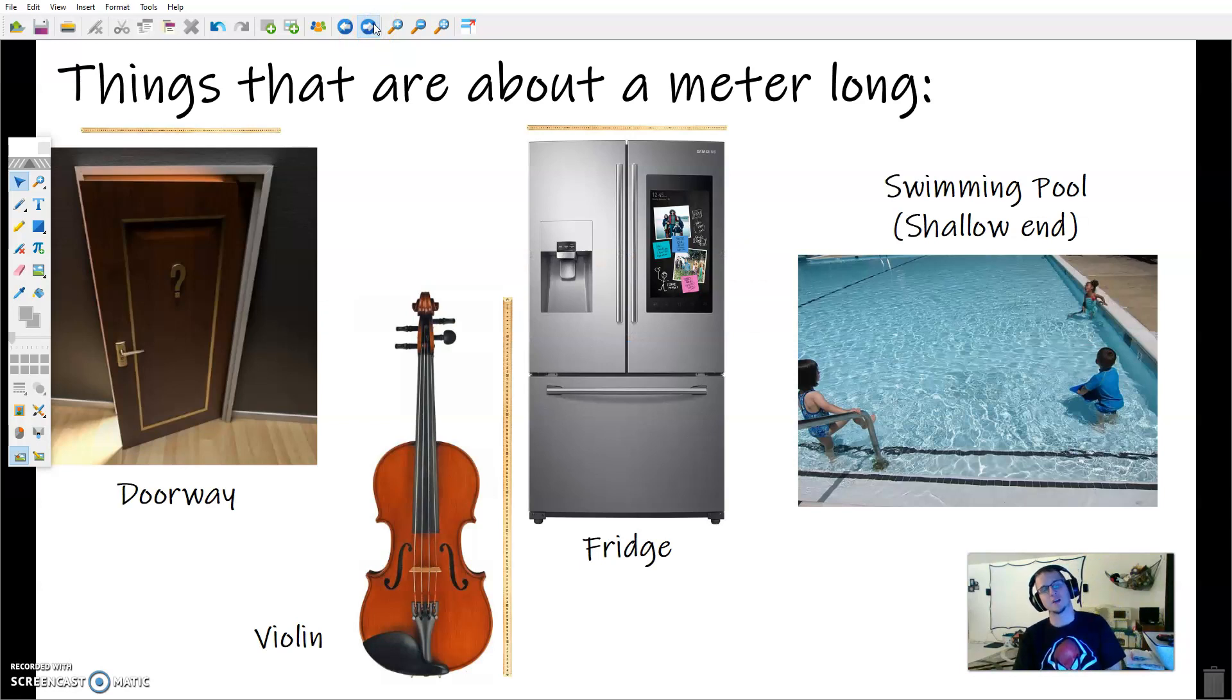So what are some things that are about a meter long? If you take a look at some of these pictures here, you'll see the average doorway is about a meter wide. A violin from the very bottom of it to the very end of the neck is about a meter long. Your average fridge is about a meter wide.